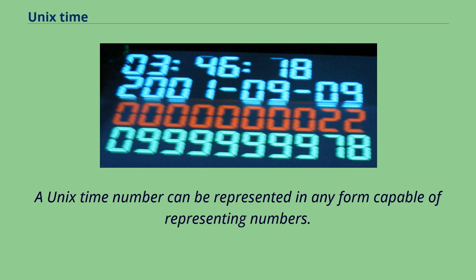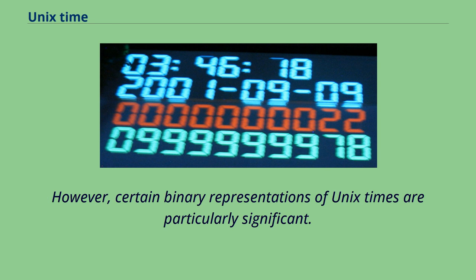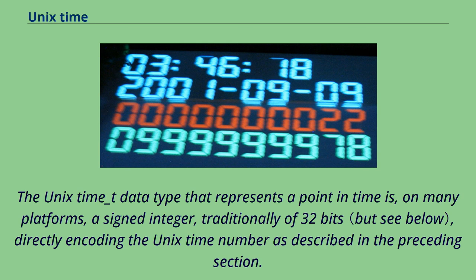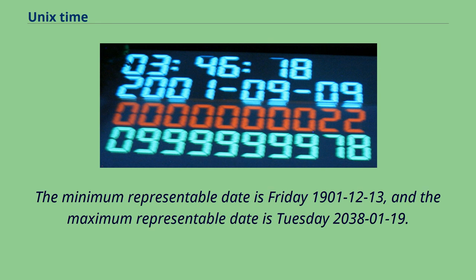A Unix time number can be represented in any form capable of representing numbers. In some applications the number is simply represented textually as a string of decimal digits. However, certain binary representations of Unix times are particularly significant. The time_t data type that represents a point in time is, on many platforms, a signed integer, traditionally of 32 bits, directly encoding the Unix time number. Being 32 bits means it covers a range of about 136 years in total. The minimum representable date is Friday, December 13, 1901, and the maximum representable date is Tuesday, January 19, 2038.